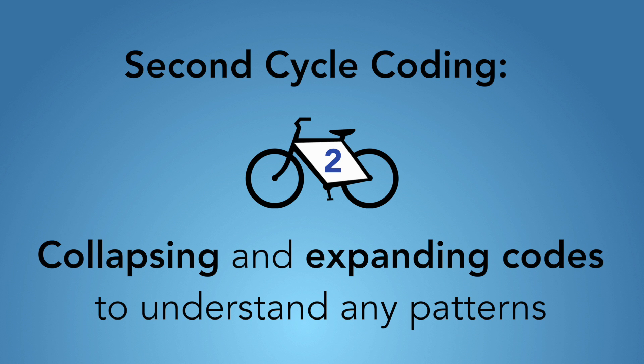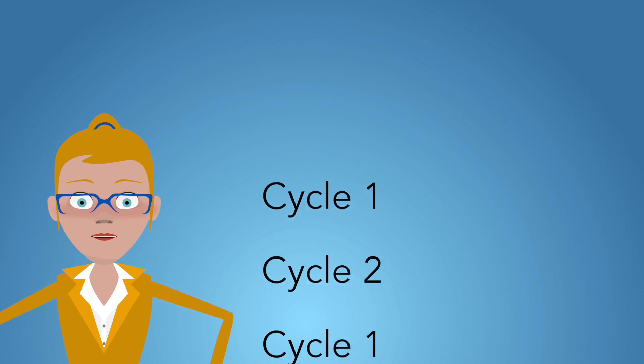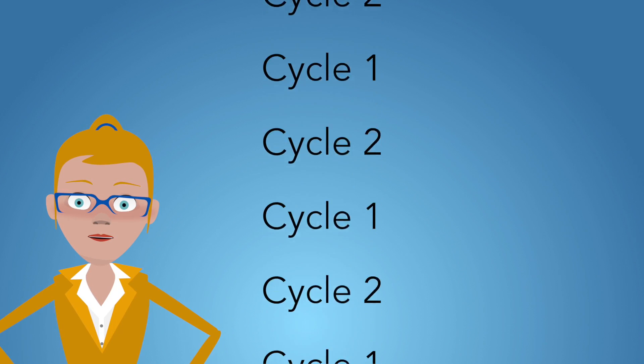Second cycle coding is when you step back and look at your notes and you're categorizing or collapsing your codes to understand your patterns. The patterns, again, are around frequency, sequence, similarity and difference, although there could be other kinds of patterns as well. And cycle one and cycle two happen over and over and over again.